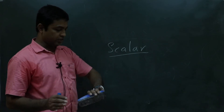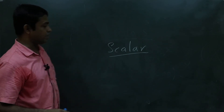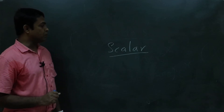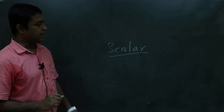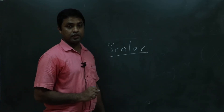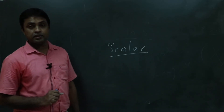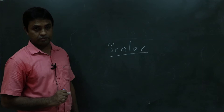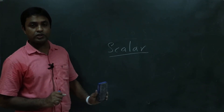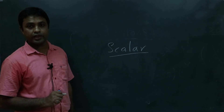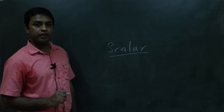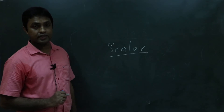I have only about 10 minutes, so let us finish certain definitions clearly. What is a scalar? Scalar is a quantity which does not change under coordinate rotation. If there is a quantity which does not change under the rotation of coordinates, then we say that that quantity is a scalar.